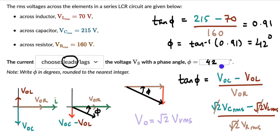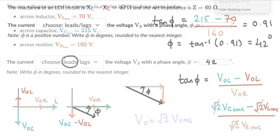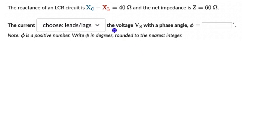Let's move on to our second example. For the second one, we have the reactance of an LCR circuit: the capacitive reactance XC minus the inductive reactance XL equals 40 ohms, and the net impedance Z is 60 ohms. The question again asks whether the current is leading or lagging the supply voltage and with what phase angle. The question is the same as before, but the information given is different — we know the difference between capacitive and inductive reactance and the net impedance.